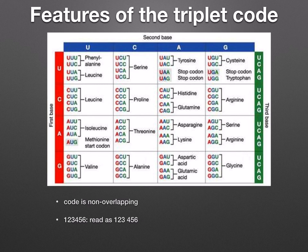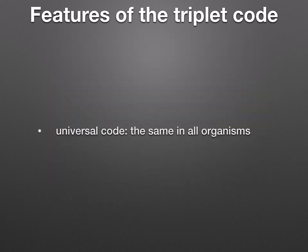Some viruses with limited amounts of DNA use overlapping codes, but this is extremely rare. Finally, we say that it's a universal code — that is, it's the same in all organisms, or almost. There are differences in some protists and in the DNA of mitochondria and chloroplasts. And as mentioned before, it's degenerate, which means that almost all amino acids have more than one triplet code.